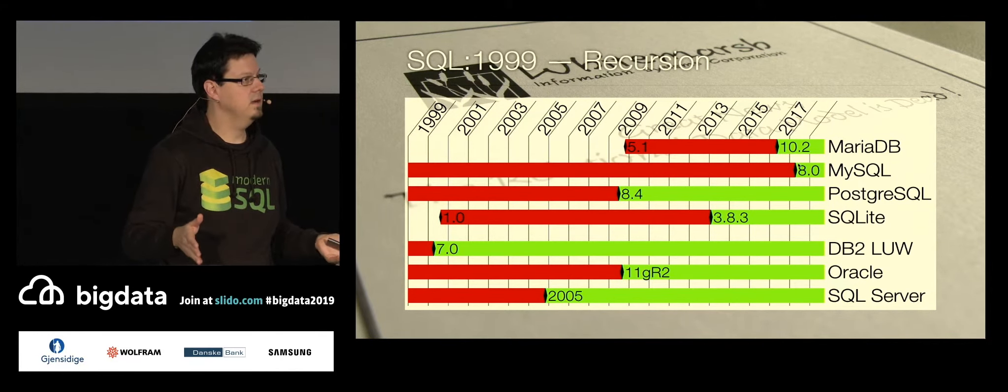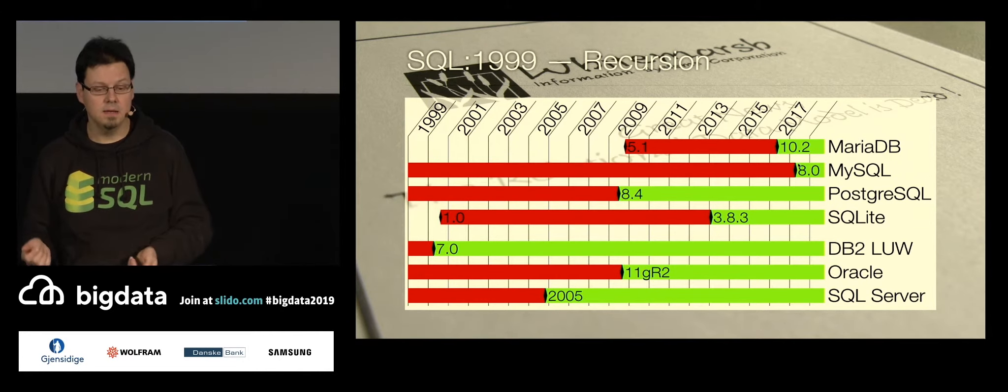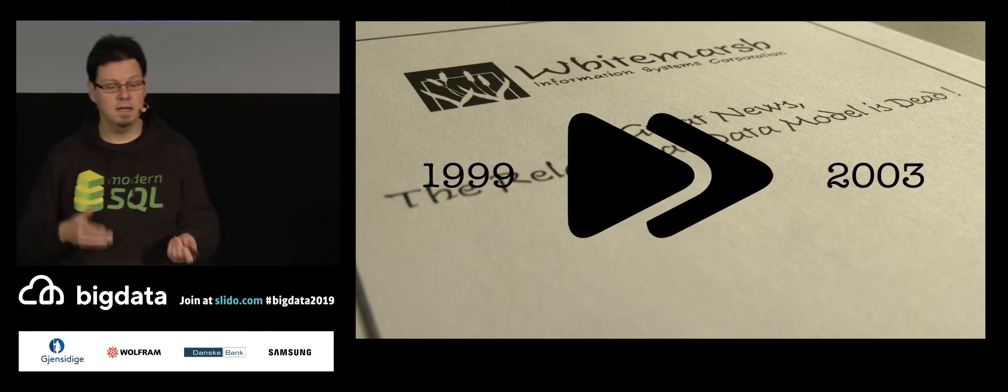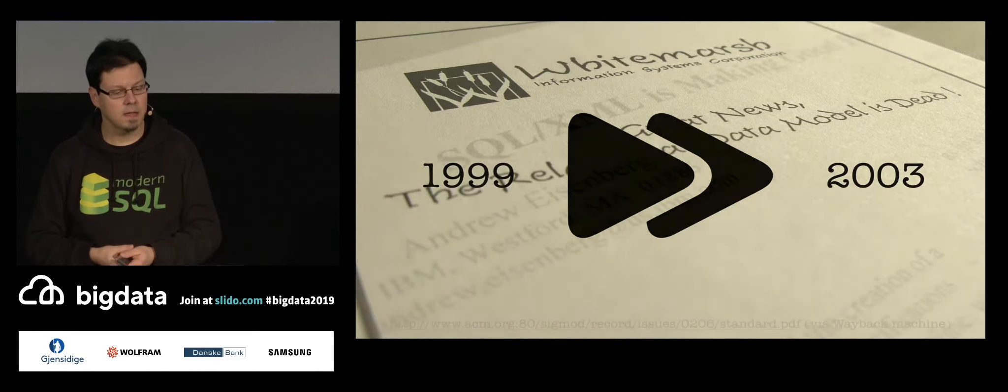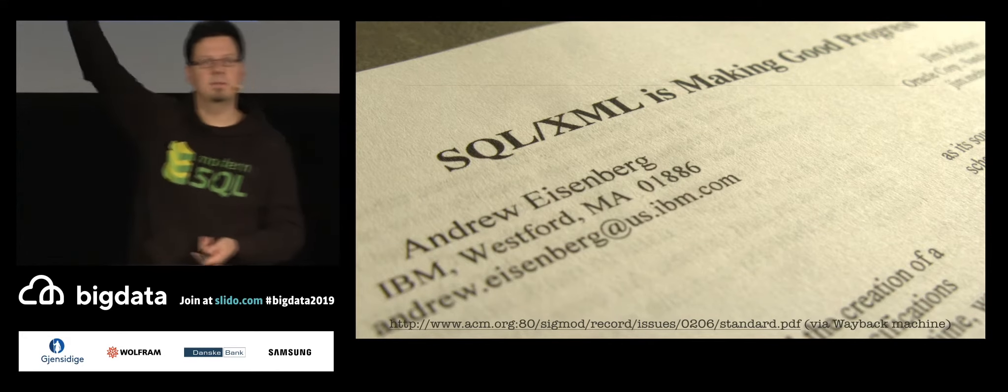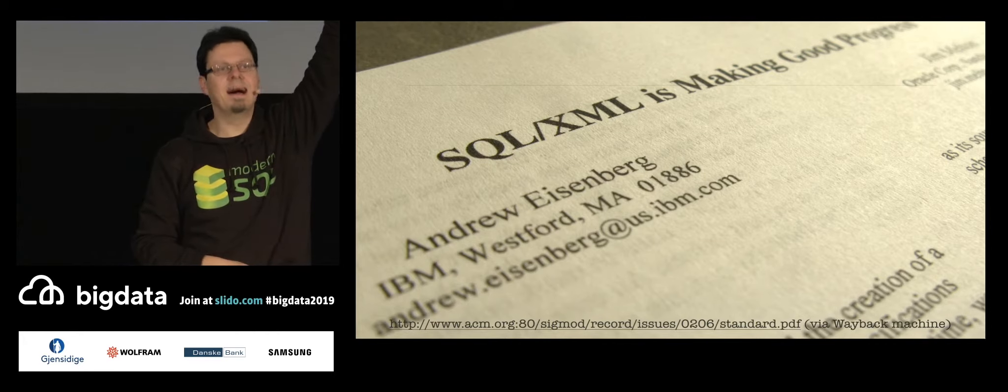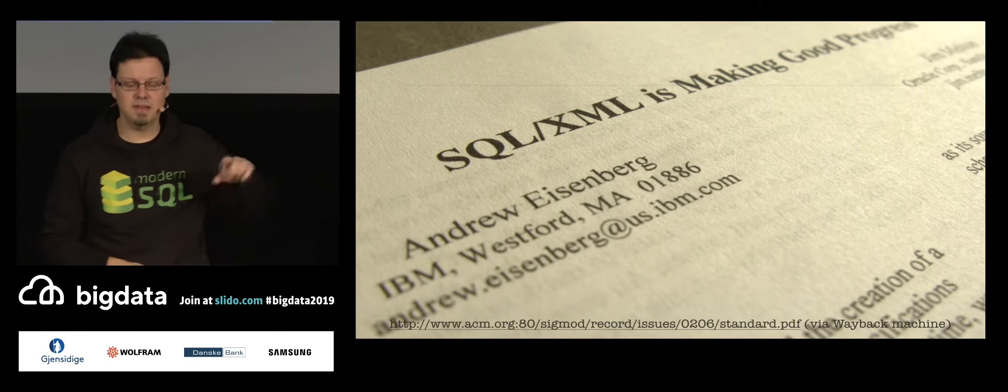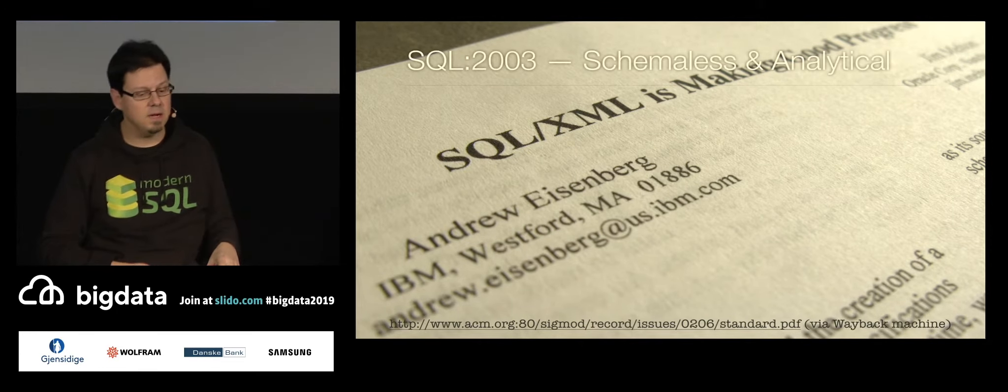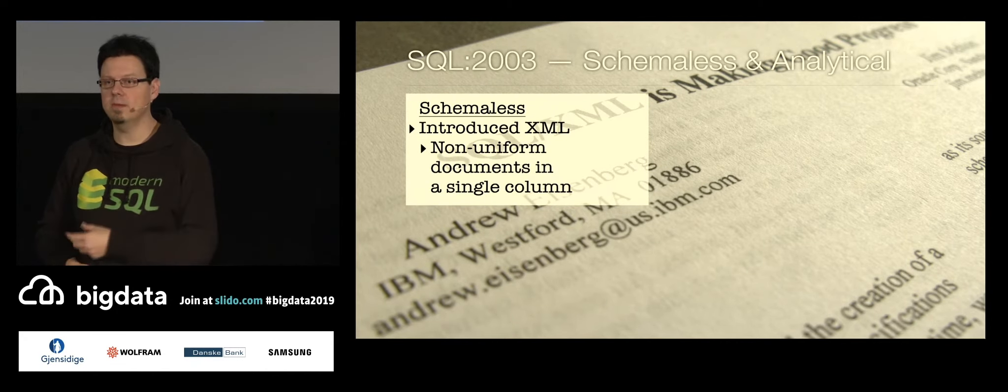So the 99 standard was really a breaking change, to say. It was really a big deal. But I have to go on because later standards even introduced more interesting features. Like in 2003, we have got what was hip at that time, XML. Who is using XML? Okay. Just out of curiosity, who is using JSON? Ah, more. So I have something about JSON later on there. But at that time, in 2003, we have got schema-less support. So 2003 was the year when SQL became a document store.